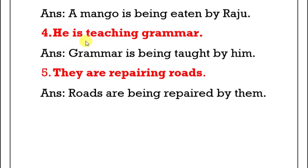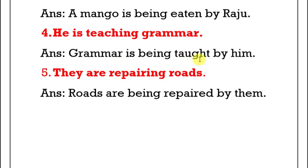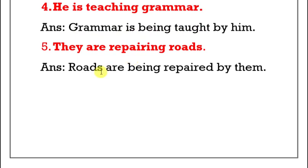Fourth example: 'He is teaching grammar.' Here 'grammar' is the object and it is singular. Grammar is being... the V3 form of teaching is taught. So: 'Grammar is being taught by him.' This is the right answer.